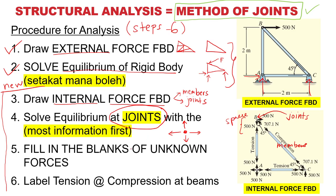Step five: fill in the blanks with all the unknown forces. Step six: label whether your members are in tension or compression. What you're trying to determine is which one is tension — for example 500 N — or compression — in this case 707 N. Once you've got all the member forces and all the member states — meaning either tension or compression — then you're done.